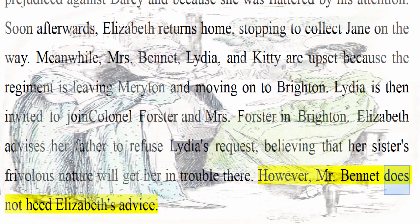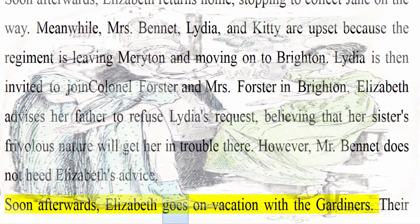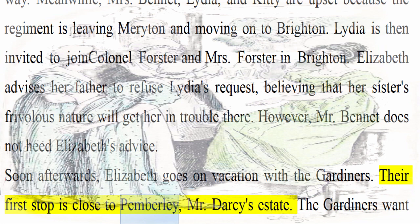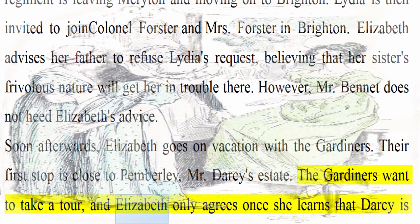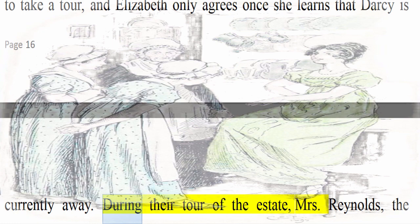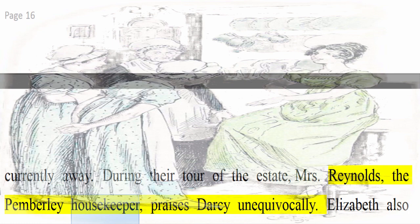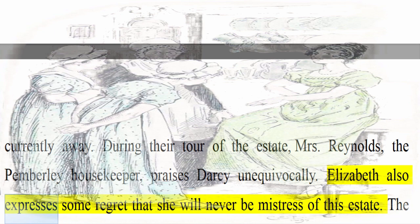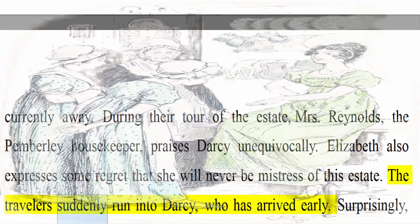Soon afterwards, Elizabeth goes on vacation with the Gardiners. Their first stop is close to Pemberley, Mr. Darcy's estate. The Gardiners want to take a tour, and Elizabeth only agrees once she learns that Darcy is currently away. During their tour of the estate, Mrs. Reynolds, the Pemberley housekeeper, praises Darcy unequivocally. Elizabeth also expresses some regret that she will never be mistress of this estate. The travelers suddenly run into Darcy, who has arrived early. Surprisingly, Darcy is extremely cordial to both Elizabeth and the Gardiners.